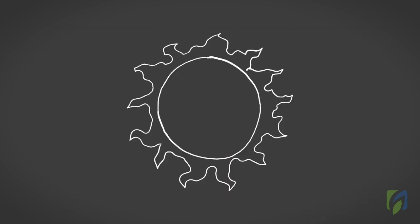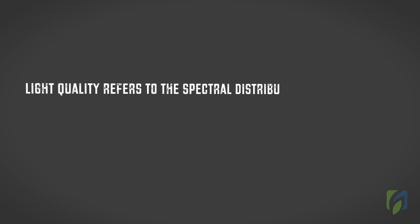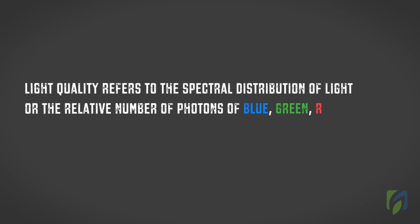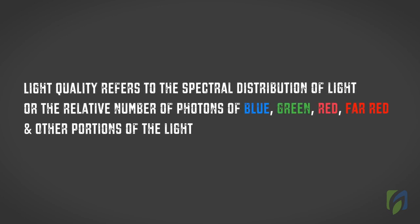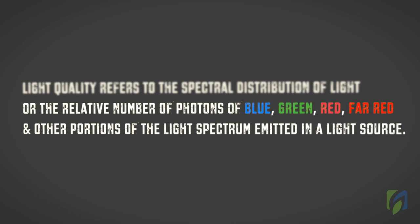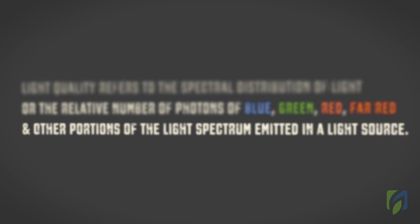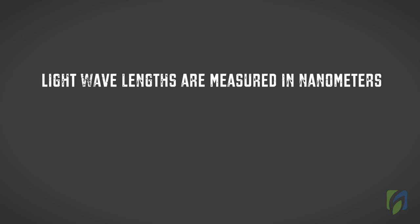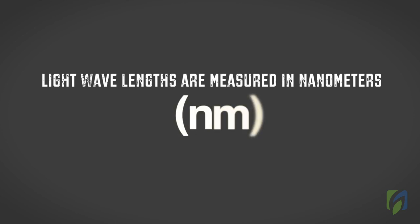Sunlight supplies a complete range of wavelengths. Light quality refers to the spectral distribution of light, or the relative number of photons of blue, green, red, far red, and other portions of the light spectrum emitted from a light source. Some of these portions are visible, whereas others are not. Light wavelengths are measured in nanometers. A nanometer, abbreviated NM, is one billionth of a meter.